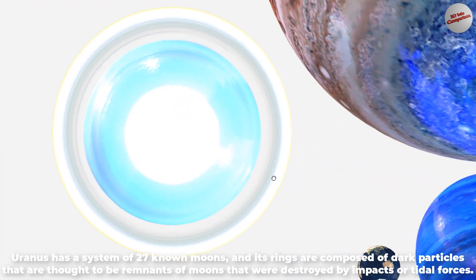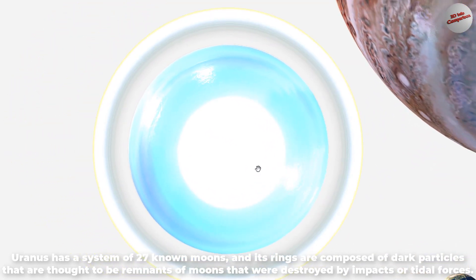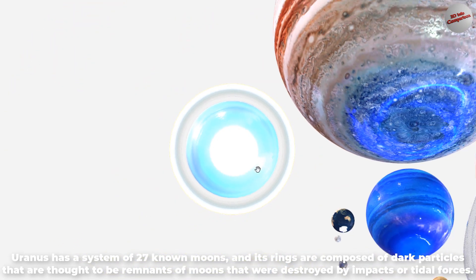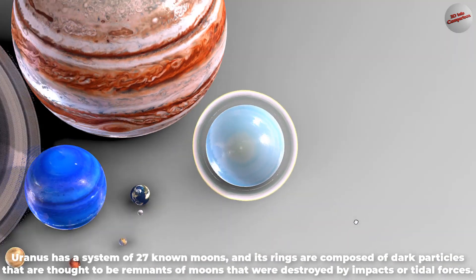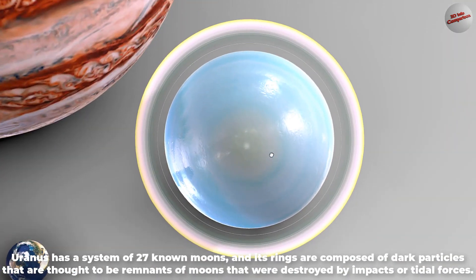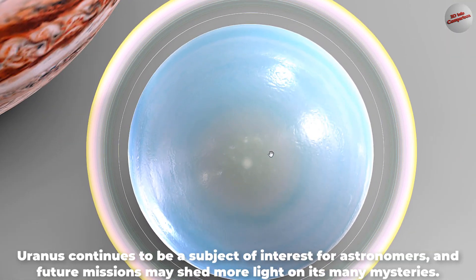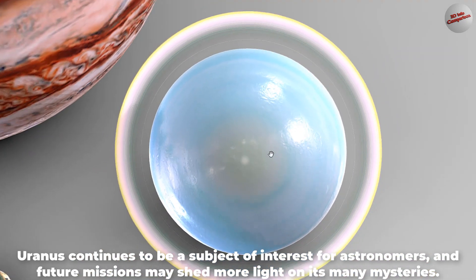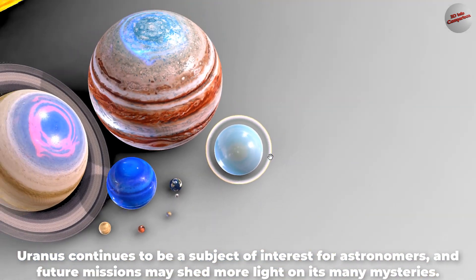Uranus has a system of 27 known moons, and its rings are composed of dark particles that are thought to be remnants of moons that were destroyed by impacts or tidal forces. Uranus continues to be a subject of interest for astronomers, and future missions may shed more light on its many mysteries.